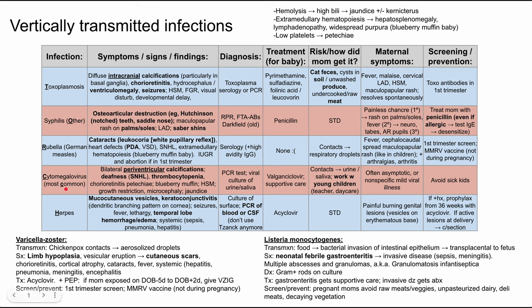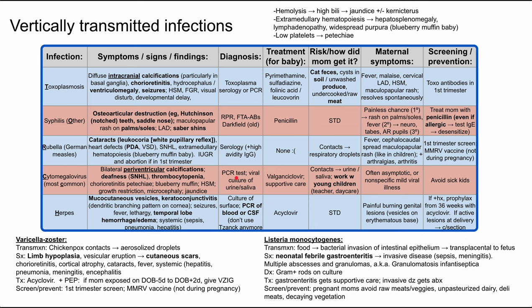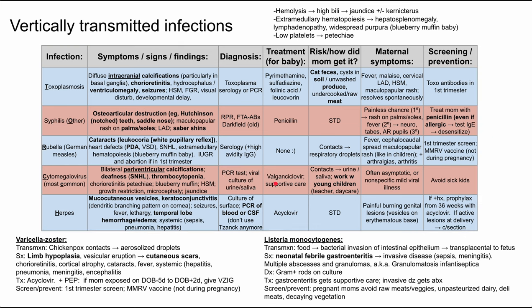Next is cytomegalovirus, the most common of the TORCH infections — I use the C for 'common' as a reminder. CMV has bilateral periventricular calcifications, whereas toxoplasmosis has diffuse intracranial calcifications. These babies also have sensorineural hearing loss, thrombocytopenia, chorioretinitis, blueberry muffin rash, jaundice, growth restriction, microcephaly, and hepatosplenomegaly. Diagnosis is by PCR or viral culture of urine and saliva. Treatment for the baby is valganciclovir plus general supportive care including fluids and respiratory support if needed.